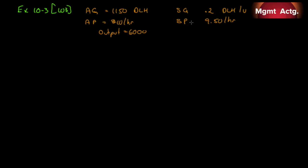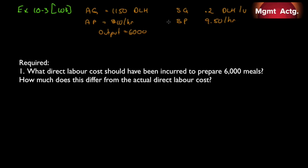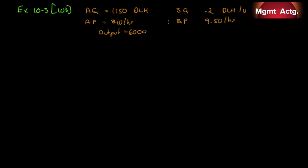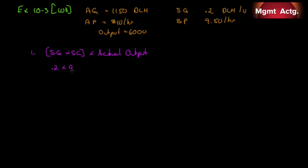We have our actual quantity, actual price, standard quantity, and standard price, so we can automatically calculate a flexible budget variance. Number one asks: what direct labor cost should have been incurred to prepare six thousand meals? To figure it out, we multiply standard quantity times standard cost times actual output. Our output is six thousand units — that's our output — while direct labor hours are our input.